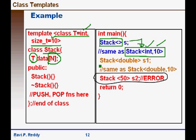Next we are instantiating a stack of double with an unspecified size out here. So for the size it will use a default value of 10. This is same as instantiating a stack of double of size 10.